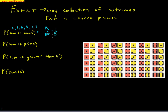That is an event — the sum is even is a collection of several values. Another event: the sum is prime. The prime sums between 2 and 12 are: 2, 3, 5, 7, and 11. We would just add up the probabilities for those outcomes. Again, an event is a collection of outcomes, not simply just one outcome.